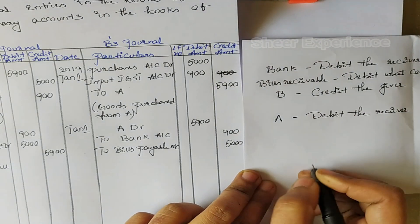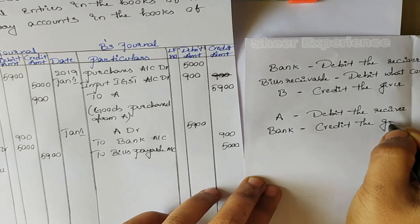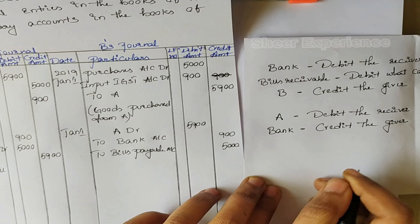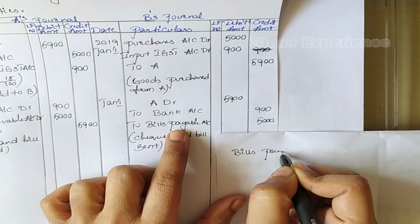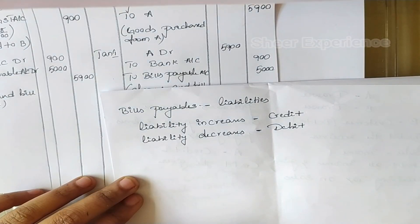In other words, creditor is a liability and liability is decreasing, so we need to debit it. We are crediting Bank Account — as per the personal account rule we credit the giver, so asset is decreasing and we credit it. Bills Payable is a liability; liability is increasing so we credit it.